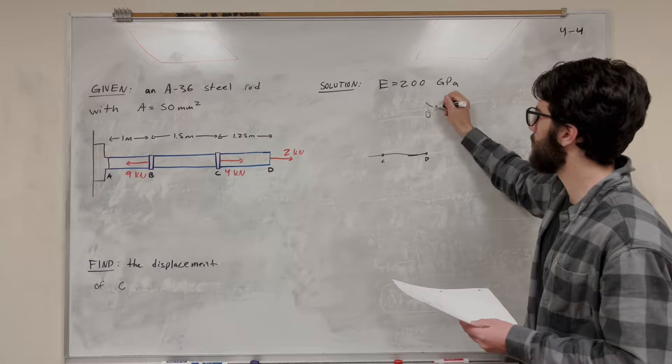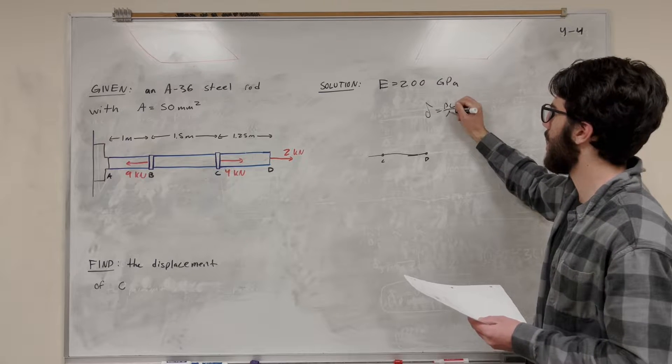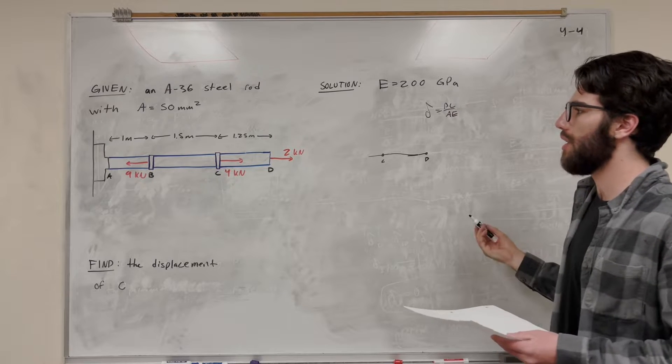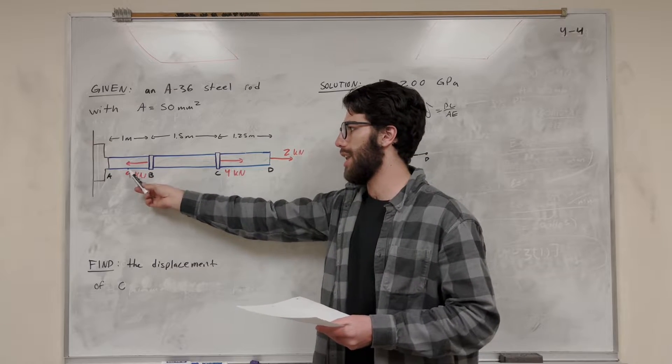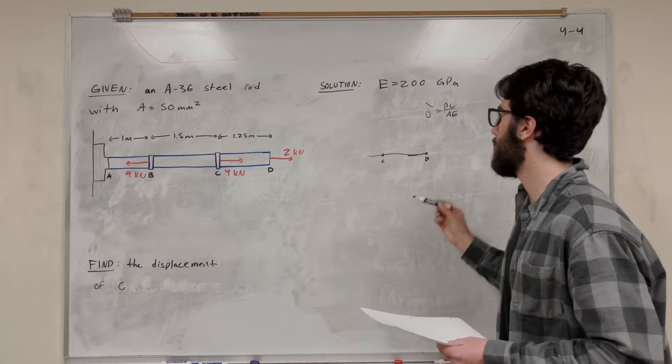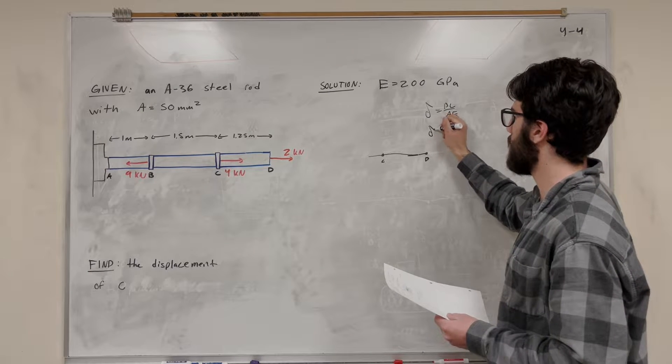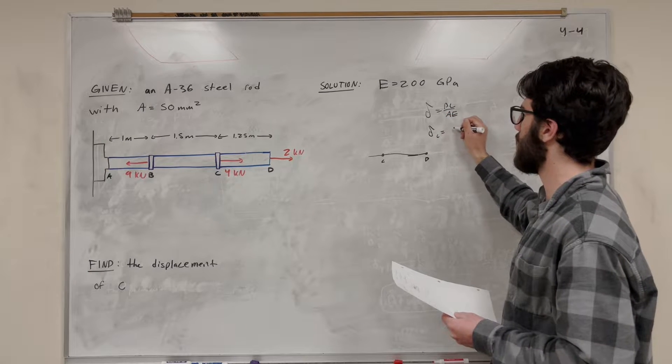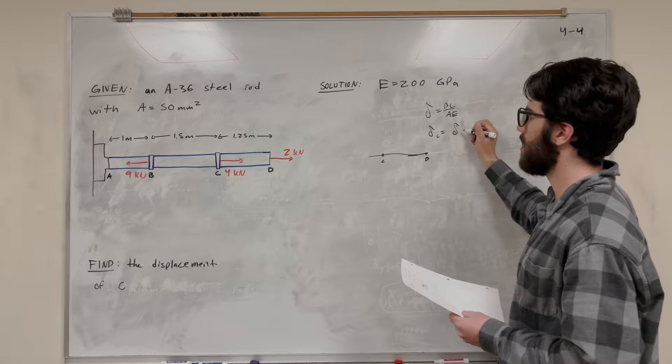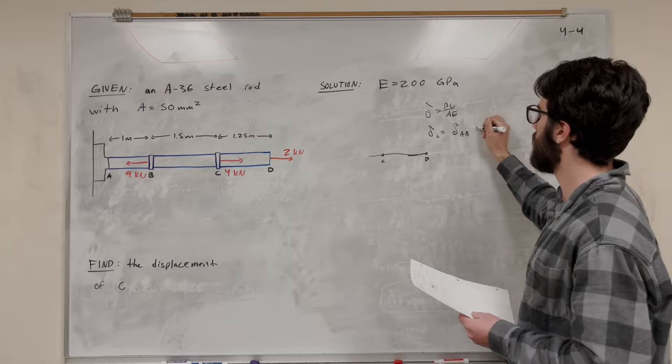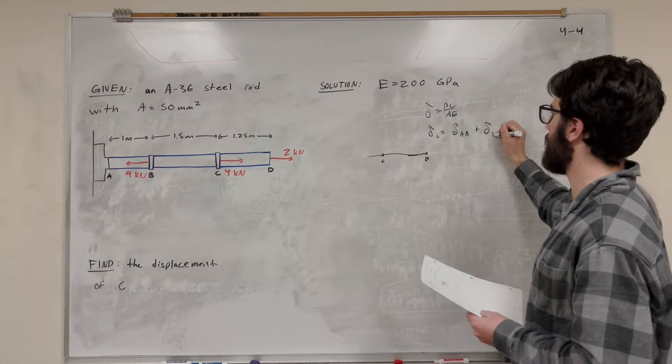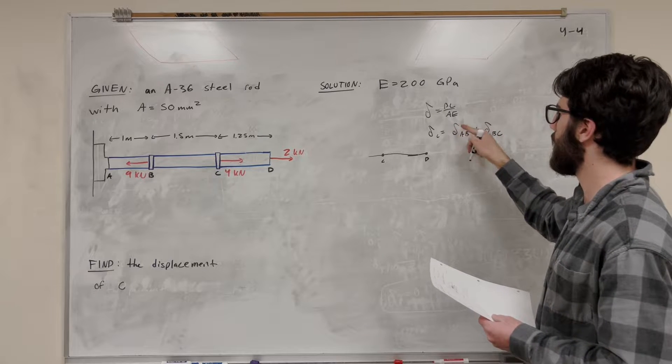But because we're going to have multiple displacements, we're going to need to check AB and BC, we're going to need to add them up. So let's write that the displacement of C is equal to the displacement of AB plus the displacement of BC. That's what we want to do.